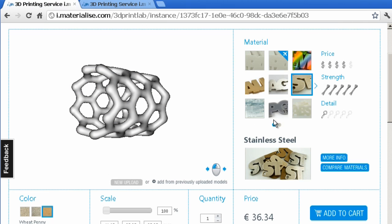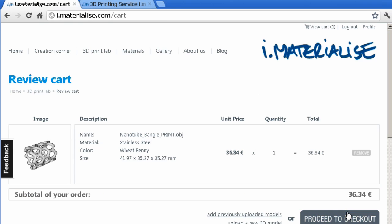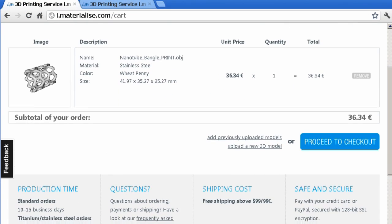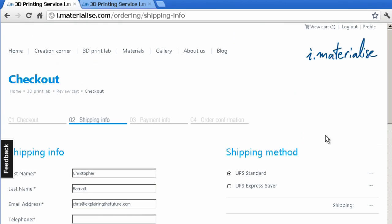So having uploaded the model, I just have to add it to my cart. There it is. There's the image of a nanotube, the material itself, price. And I now just need to proceed to checkout. It's a very straightforward process.